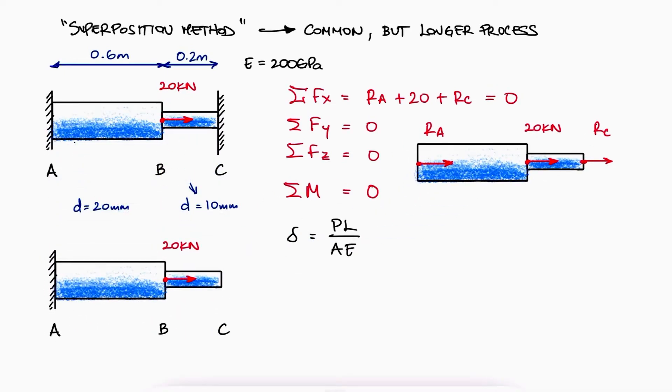If, using the superposition method, we would remove one of the constraints and see how the structure deforms. For example, without the wall at C, we could calculate how much ABC is stretching or its equivalent, how much C is being displaced now that there is no wall there.